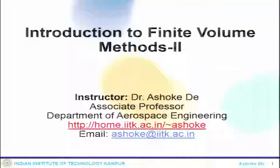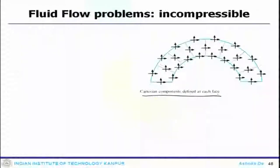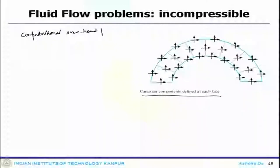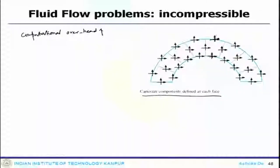Welcome back to the lecture series on finite volume, where we will continue our discussion from the last lecture. The computational overhead increases substantially because all the faces now start storing all the components of the velocity field. For example, each face stores both components of the velocity field.